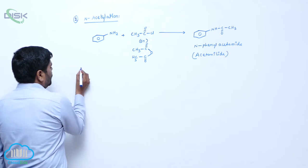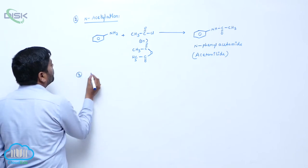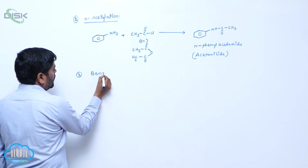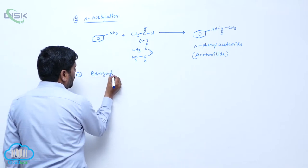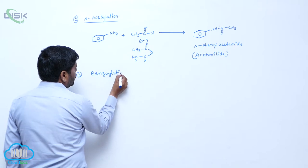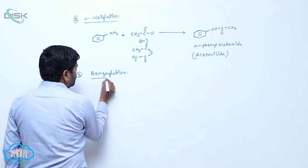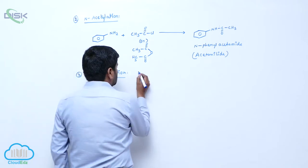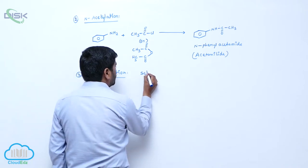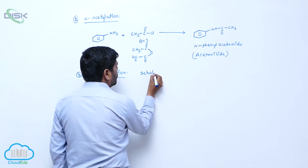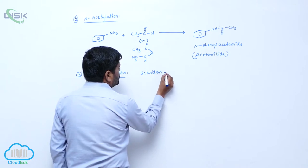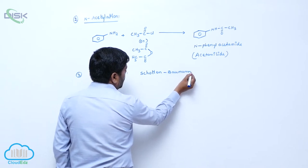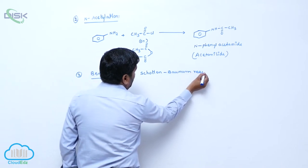Next, third one is benzoylation. Benzoylation. This is known as Schotten-Baumann reaction.